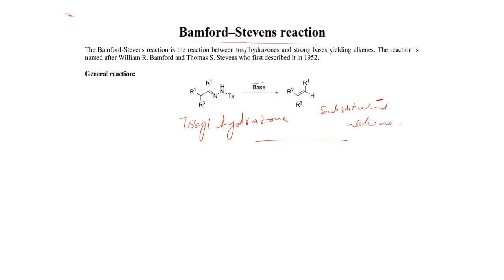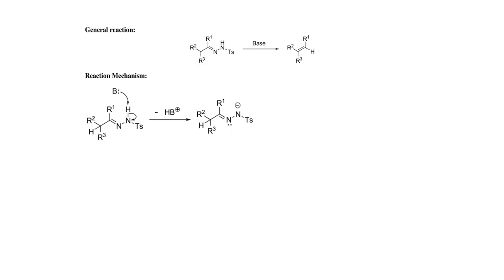So what will be the mechanism for this reaction? Let's have a look at the reaction mechanism. In the first step, the base will abstract the hydrogen atom which is directly attached with nitrogen. So the bond will shift back towards nitrogen and nitrogen will get a negative charge, as you can see here — nitrogen with negative charge.